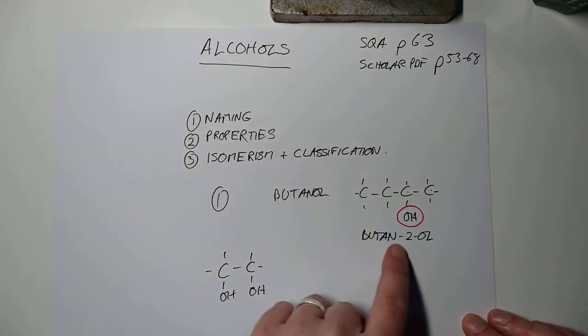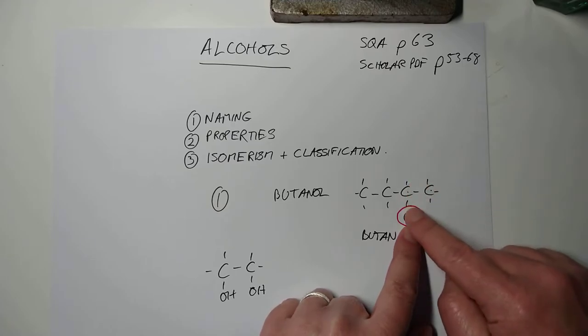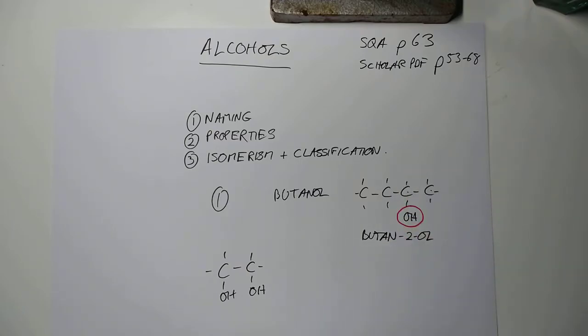So, naming, you have to put the number in to specify. If there is a branch, then the branch is secondary to the hydroxyl. The hydroxyl is the daddy for alcohol, so you always start naming the carbons nearest the hydroxyl, not near the other branches.